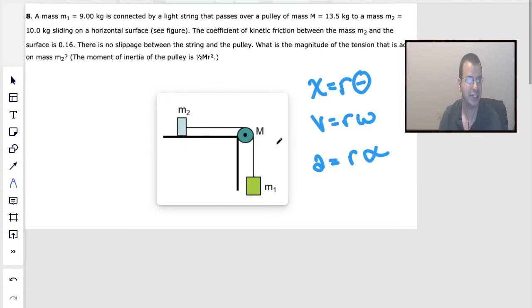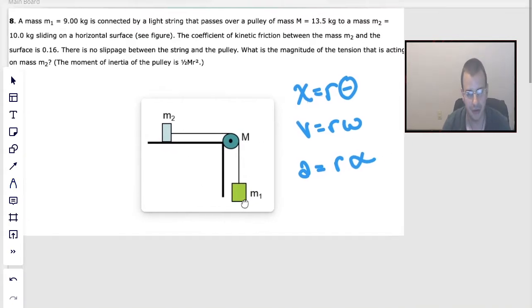What is the magnitude of the tension that is acting on mass M2? So we're going to find the tension there. And then they give us a moment of inertia, which is kind of them.